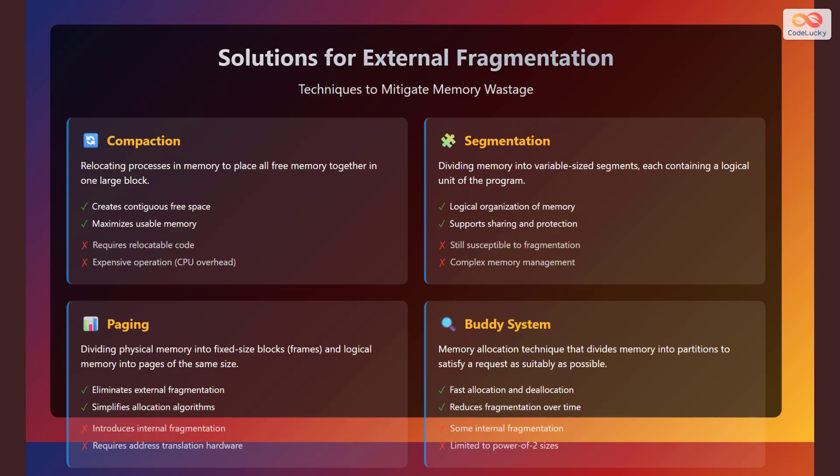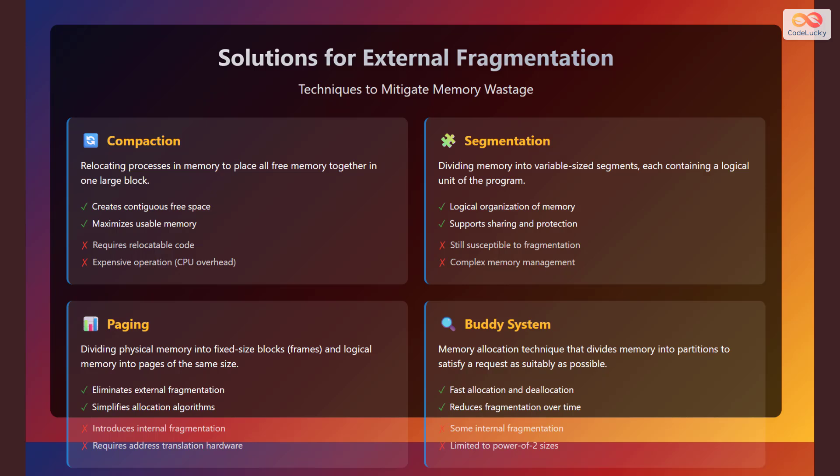There are several techniques that can be used to mitigate the effects of external fragmentation. One is compaction. This involves relocating processes in memory to place all free memory together in one large block. It creates contiguous free space and maximizes usable memory. However, it requires relocatable code and is an expensive operation, resulting in CPU overhead. The other technique is segmentation, dividing memory into variable size segments, each containing a logical unit of the program. This provides logical organization of memory and supports sharing and protection. However, it is still susceptible to fragmentation and results in complex memory management.